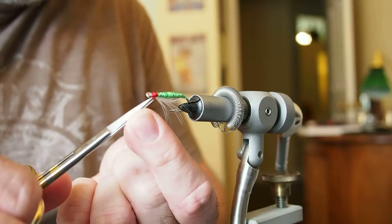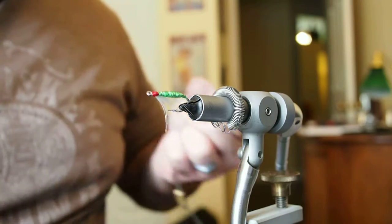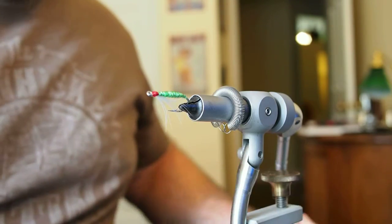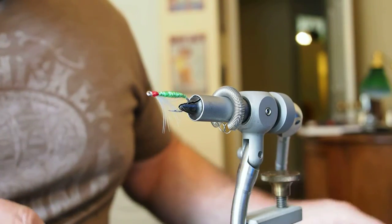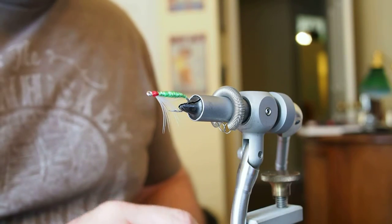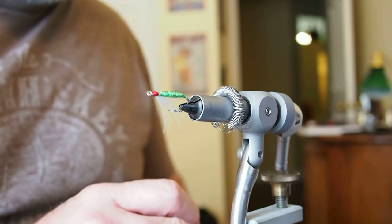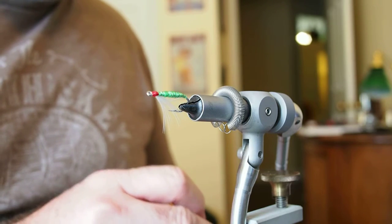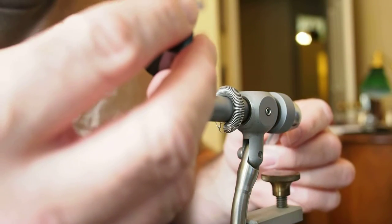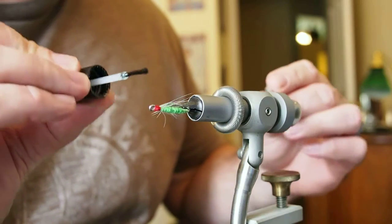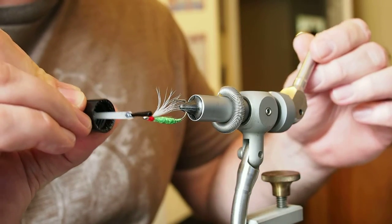And give it a whip finish. And trim our thread. Try not to cut the throat. And last but not least, touch our thread wraps on the head with a little bit of Sally Hansen's to protect those and get a nice shiny head.